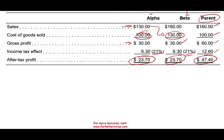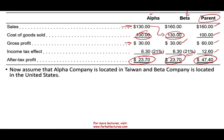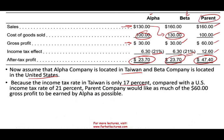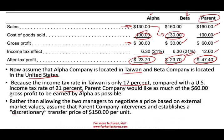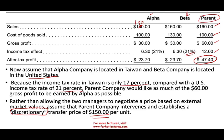Now let's change from a domestic to an international scenario. Assume Alpha is located in Taiwan and Beta in the US. Taiwan's income tax rate is only 17% compared to the US rate of 21%. The parent company would like to make as much of the $60 gross profit as possible be earned by Alpha. So rather than allowing the two managers to negotiate, the parent company intervenes and establishes a discretionary transfer price of $150.